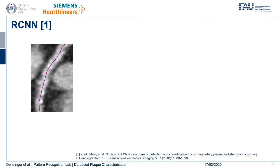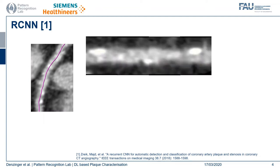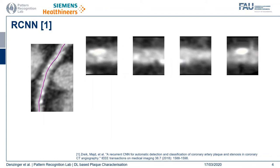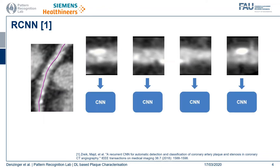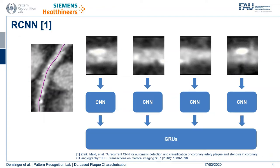The first approach I want to present is based on the work of Zreich and others, which uses a recurrent convolutional neural network to automatically detect and classify coronary artery plaque lesions. The starting point is the coronary artery centerline and, in our case, the start and end point of the lesion. We reformat this lesion into said multiplanar reformatted volume stack, which is then cut into a sequence of overlapping cubes. For each single cube, features are extracted using a convolutional neural network, and the sequence of cubes is then analyzed using a recurrent neural network, namely gated recurrent units.